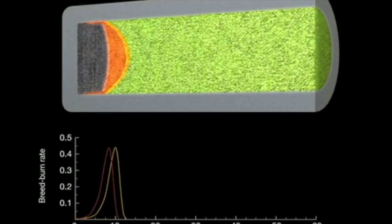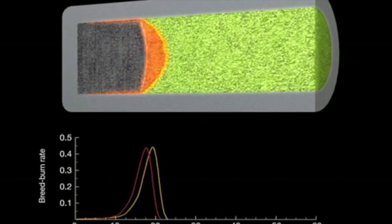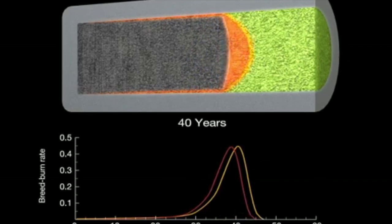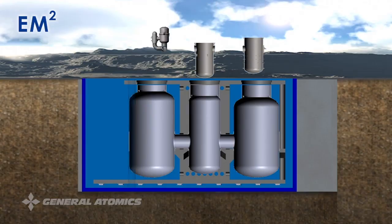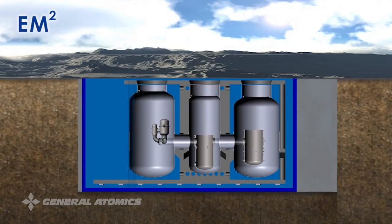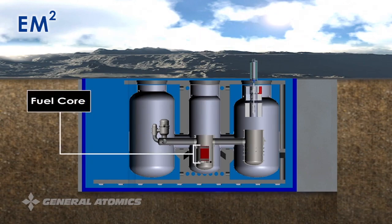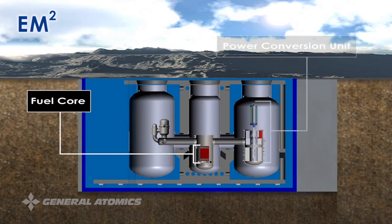The increased reactivity produced by the burning of newly bred fuel effectively cancels out the negative effect of accumulating fission products, keeping the core power output steady. The core is designed to produce 265 MW of power for a full 30 years before needing to be refuelled, greatly reducing the proliferation risk posed by more frequent extraction and reprocessing cycles.